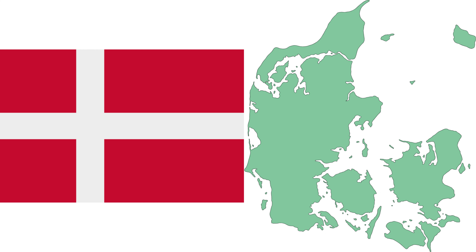Metropolitan Denmark is the southernmost of the Scandinavian countries, lying southwest of Sweden, south of Norway, and north of Germany. As of 2013, the Kingdom of Denmark, including the Faroe Islands and Greenland, has a total of 1,419 islands above 100 square meters (1,100 square feet), 443 of which have been named and of which 78 are inhabited.